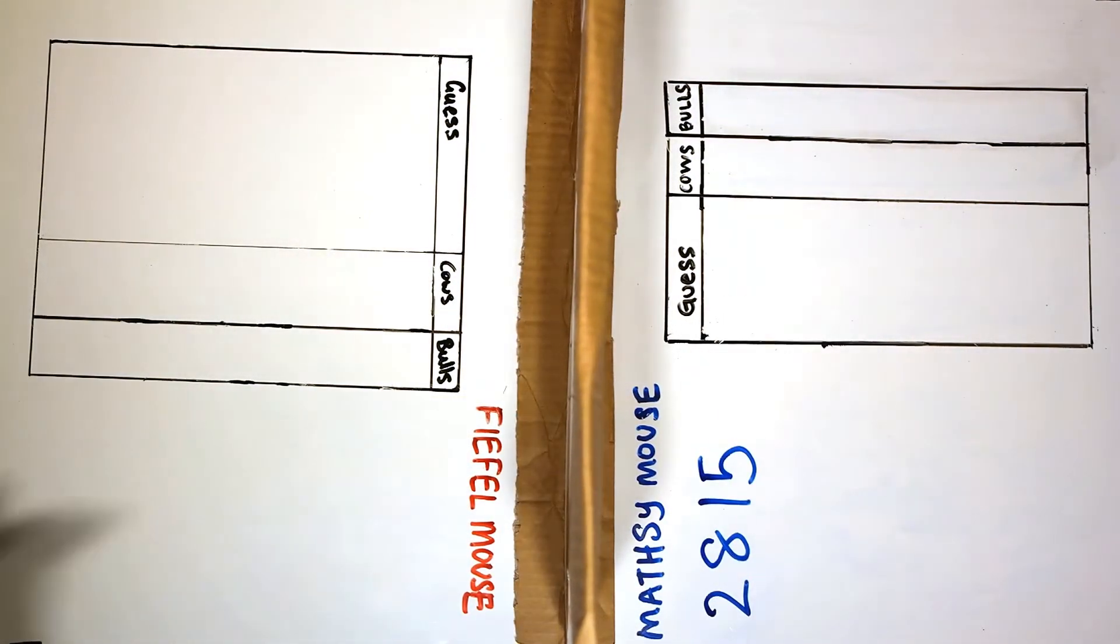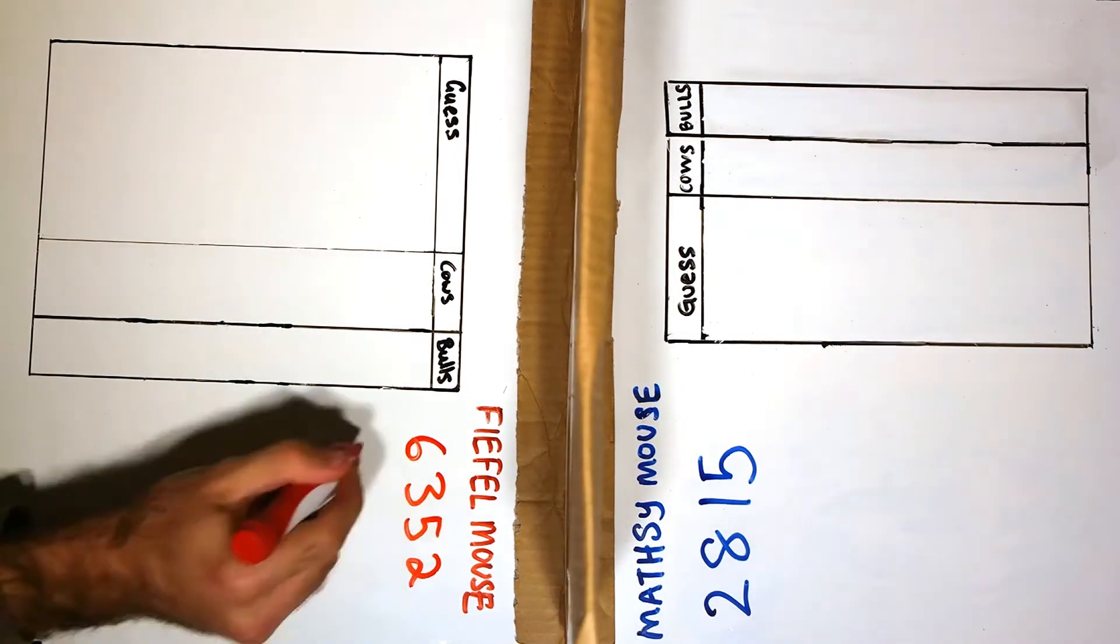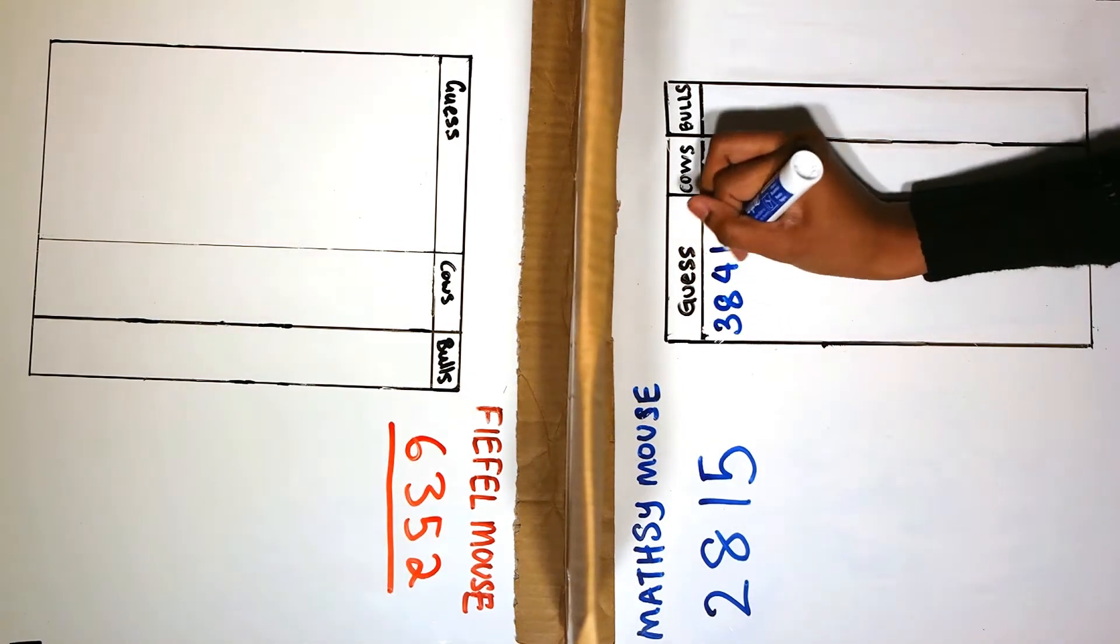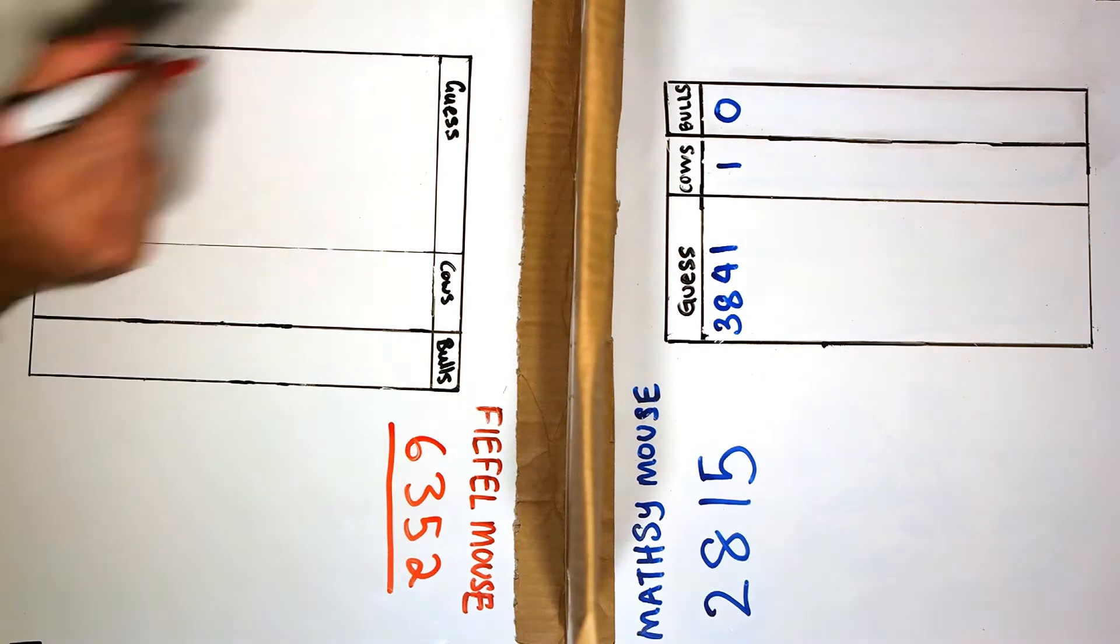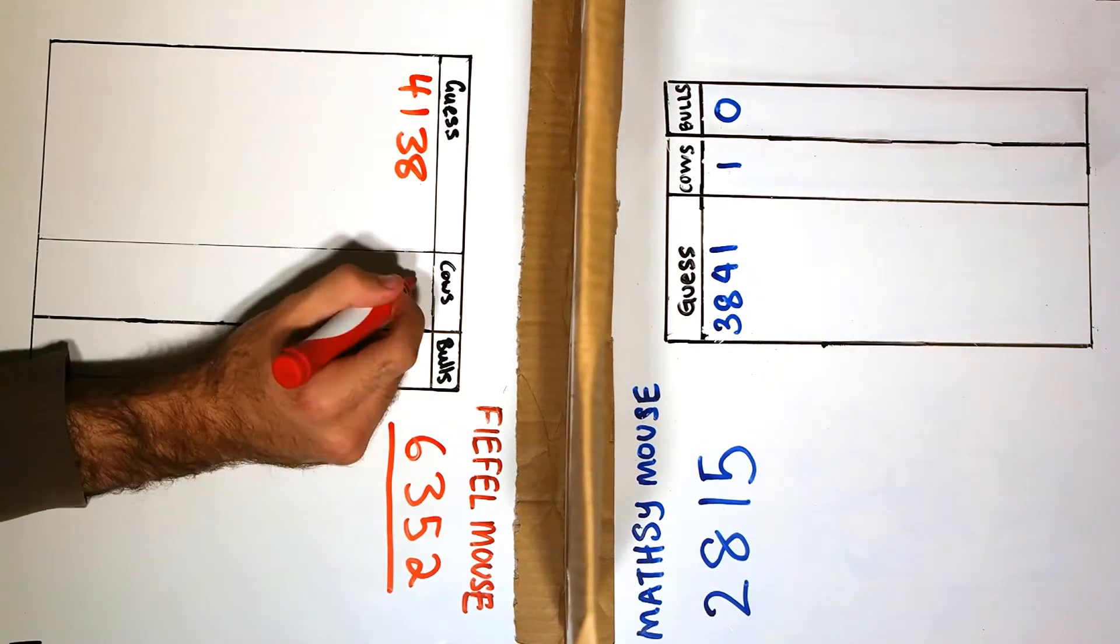Mysteries are always so exciting to solve. Bulls and Cows is a code-breaking game which puts two opponents in a race against time to crack the code.